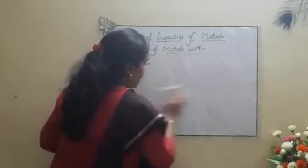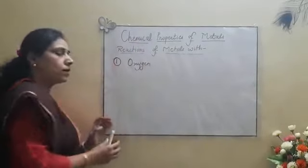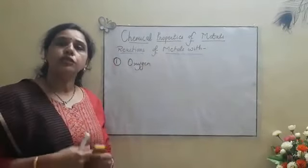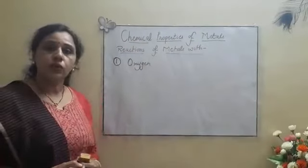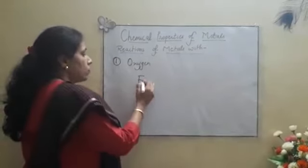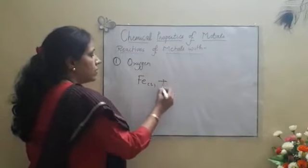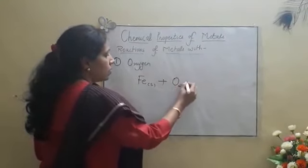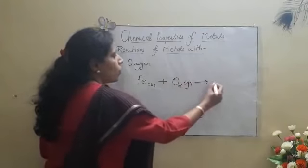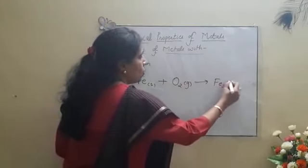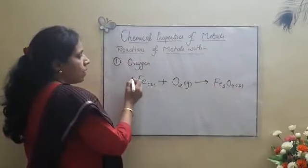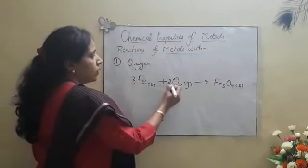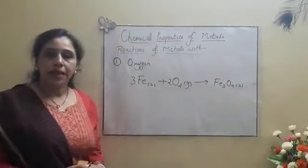Let us write reaction of iron with oxygen. Iron reacts with oxygen to form a mixture of iron 2 and iron 3 oxide. That is Fe3O4. So Fe in solid state when it is heated, it will react with oxygen to form Fe3O4. In order to balance it, we will have to write 3 here and 2 here. The equation is balanced.